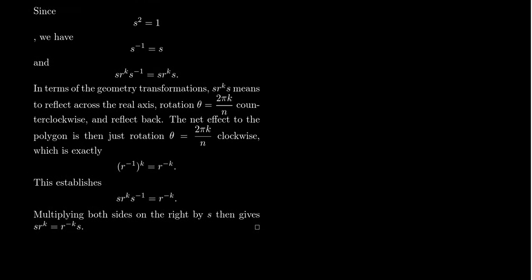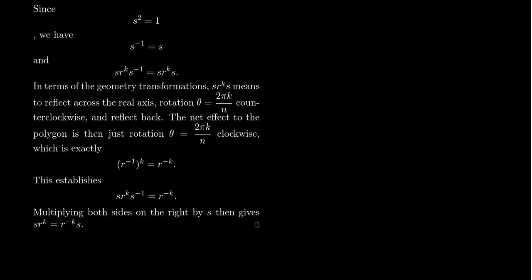In terms of the geometric transformation, the map S R^k S is composed right to left. The rightmost S acts first: reflect across the real axis, then rotate by angle 2πk/n counterclockwise, then reflect back.